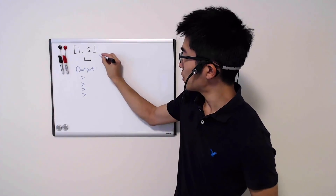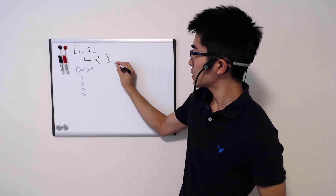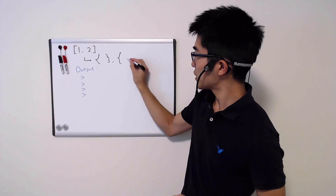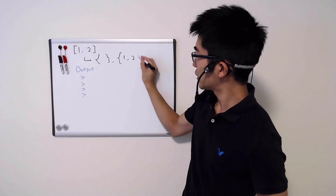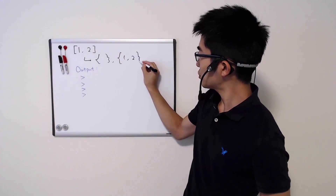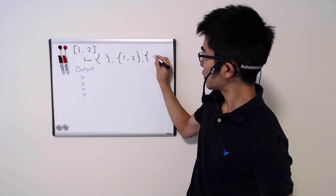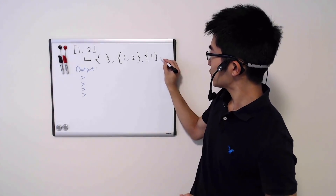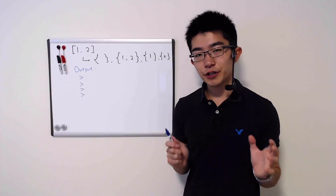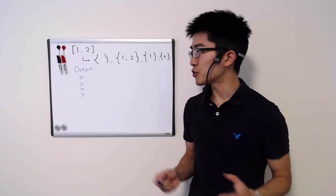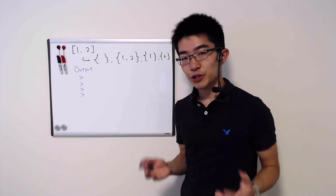For example, one potential subset is an empty set, and another subset of this entire set is the given set itself — one, two. The two other subsets are single-item subsets: one and two. Now your function doesn't have to return anything, but it's supposed to print out all of the subsets to standard output.